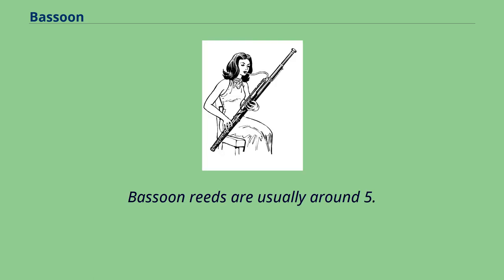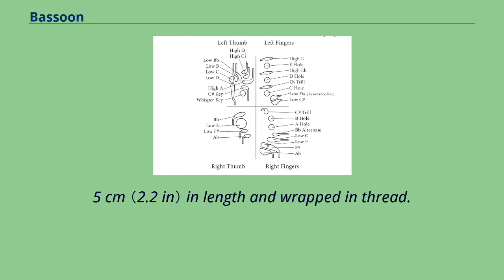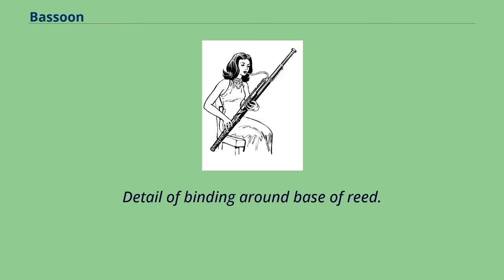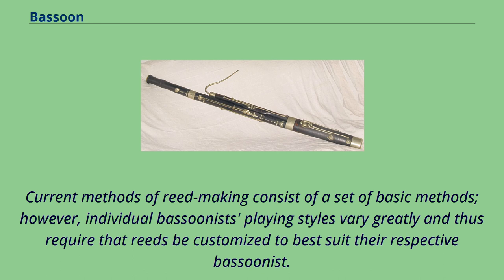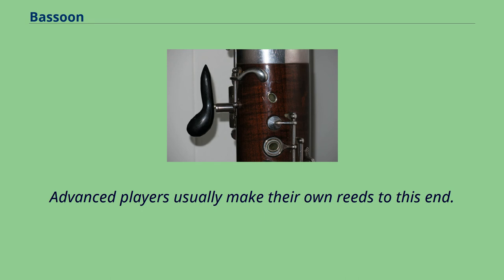Bassoon reeds are usually around 5.5 cm in length and wrapped in thread. The art of reed making has been practiced for several hundred years, some of the earliest known reeds having been made for the dulcian, a predecessor of the bassoon. Current methods of reed making consist of a set of basic methods; however, individual bassoonists' playing styles vary greatly and thus require that reeds be customized to best suit their respective bassoonist. Advanced players usually make their own reeds to this end.